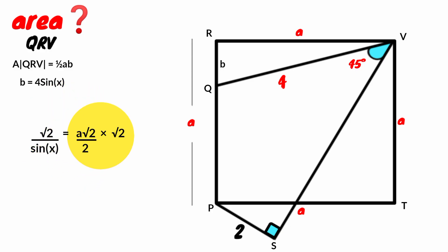1 over sin X times root 2 is root 2 over sin X. A root 2 over 2 multiplied by root 2 is A times 2 over 2. And 2 will eliminate 2. So root 2 over sin X equal to A. That is, A equal to root 2 over sin X.